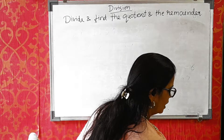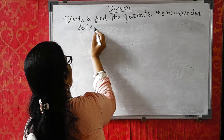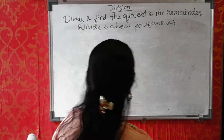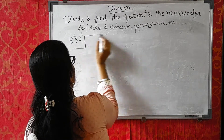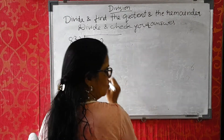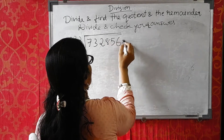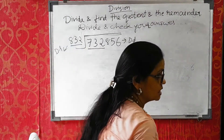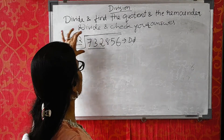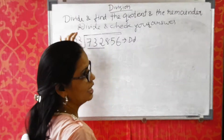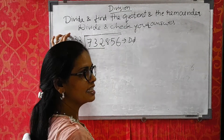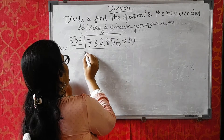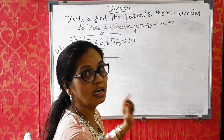Now one different sum: divide and check your answer. The sum is 732856 divided by 832. Divisor is 3 digits, so take 3 digits from the dividend. Children, I have taken this sum purposely. I was telling you this portion should be equal to or bigger than the divisor. But when those 3 digits are less than the 3-digit divisor, you must first multiply by 0 and subtract 0 — this step is compulsory. Directly you cannot take only 2 digits.